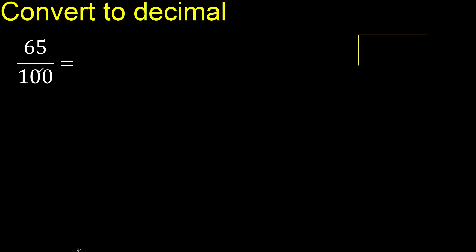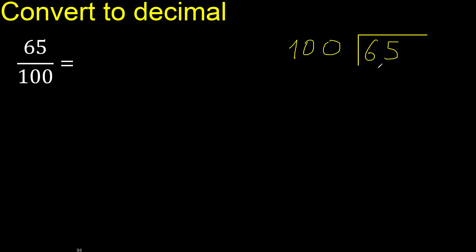65 divided by 100 is less, therefore complete. Always complete with 0. Here, 0 point is not less.